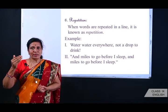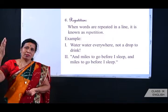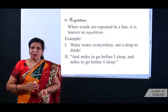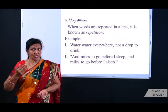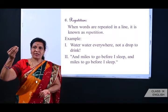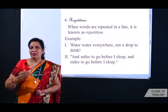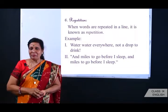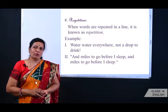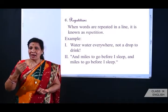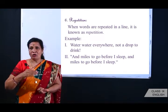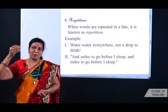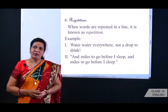Repetition is when a particular word is repeated in the lines of a poem. For example: 'water, water everywhere, not a drop to drink' — the word 'water' has been repeated. Another example from Robert Frost: 'and miles to go before I sleep, and miles to go before I sleep' — the words 'miles,' 'go,' and 'sleep' have been repeated. When the same words are repeated again and again in a line, this figure of speech is known as repetition.